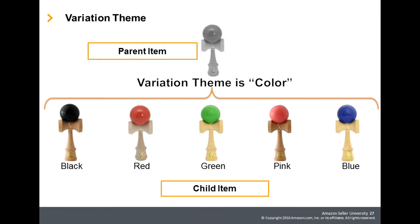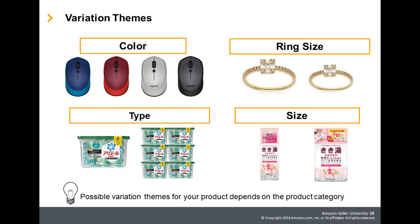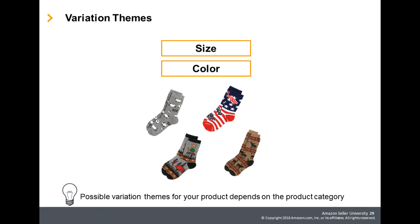To create a parent-child variation relationship, you need to indicate the variation theme, such as color, size, or other types of themes depending on the product category. Depending on the category or product, there may be multiple variation themes for one parent product, such as size and color.